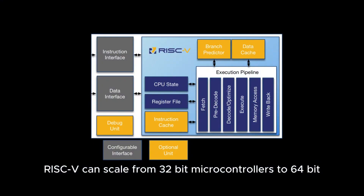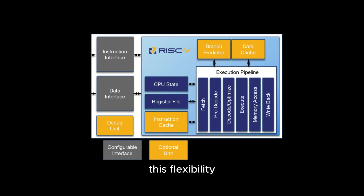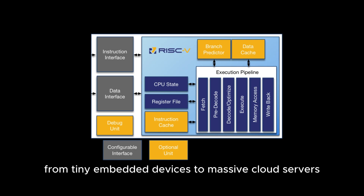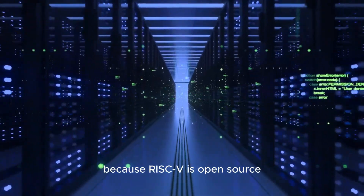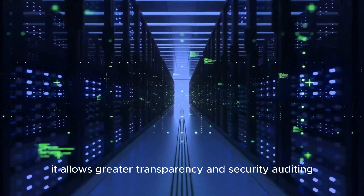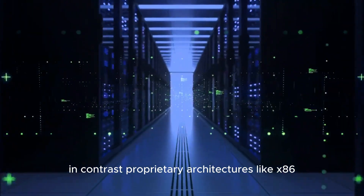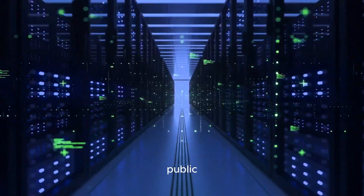On scalability, RISC-V can scale from 32-bit microcontrollers to 64-bit and even 128-bit high-performance computing processors. This flexibility allows it to be used in a wide range of applications, from tiny embedded devices to massive cloud servers. On security and transparency, because RISC-V is open source, it allows greater transparency and security auditing. In contrast, proprietary architectures like x86 and ARM can have security vulnerabilities that are not fully disclosed to the public.